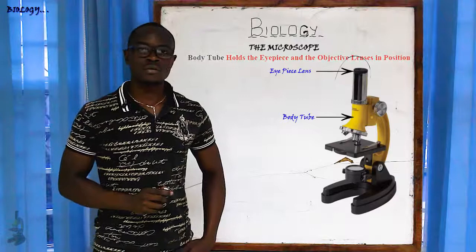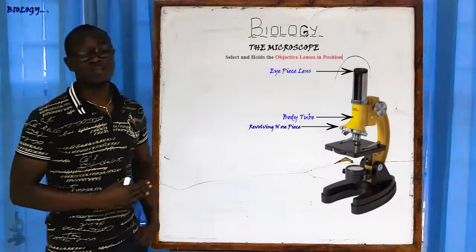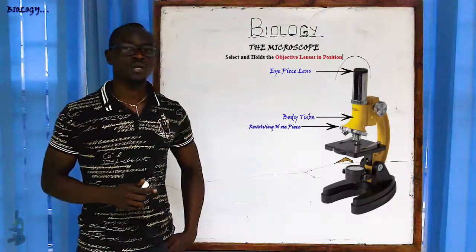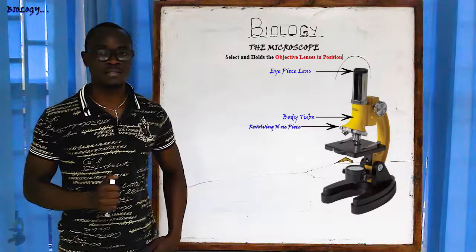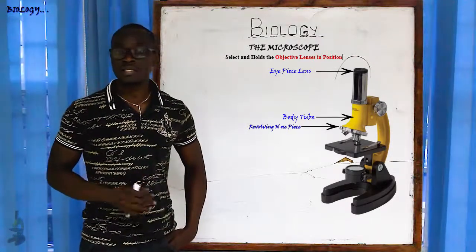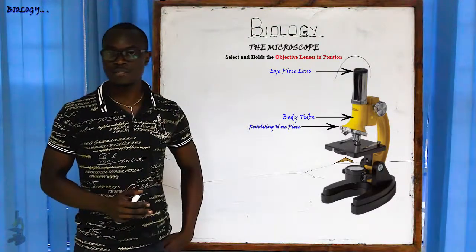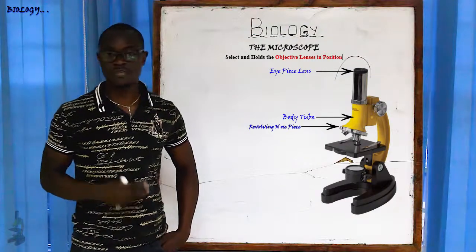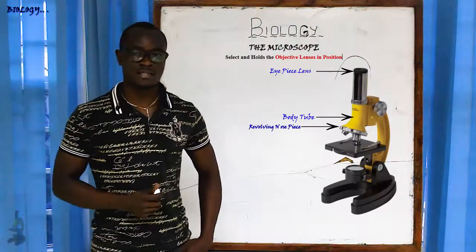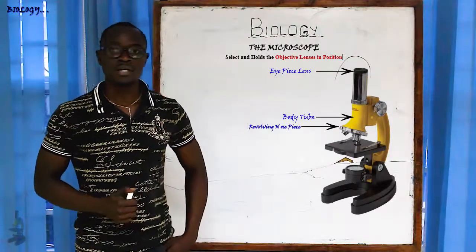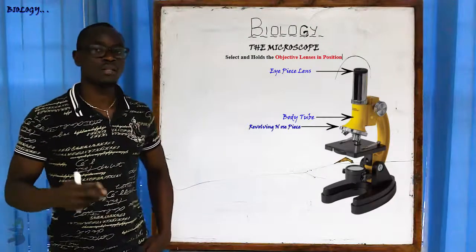Below the body tube we have the revolving nosepiece. The function of the revolving nosepiece is to allow you to select the type of objective lens you want for magnification. It has different lenses — for example, times 10, times 40, times 100 — which may vary based on the type of microscope you are using.